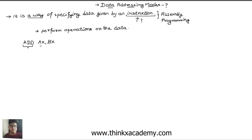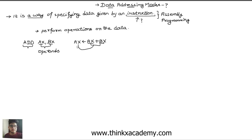What ADD does is it adds the contents of AX and BX and stores the result inside the AX register. AX and BX are also known as operands, meaning we are performing an operation on these operands. This ADD instruction can be generally written as AX = AX plus BX.